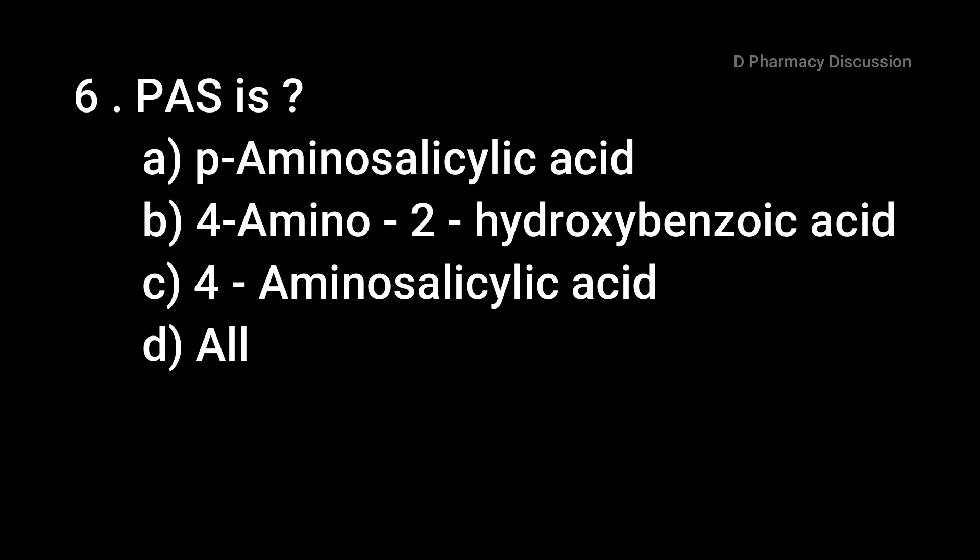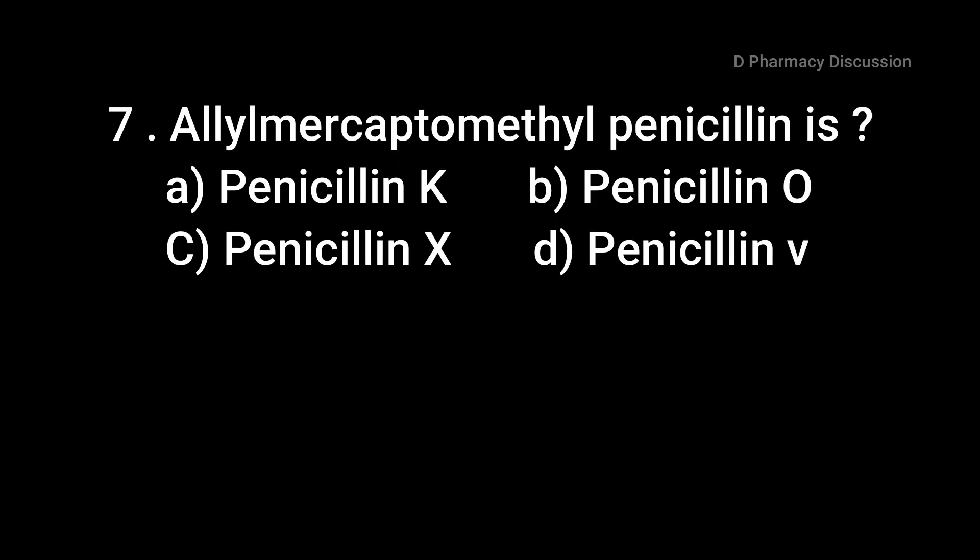Question number six: PAS is — option A: para-amino salicylic acid, B: 4-amino-2-hydroxy benzoic acid, C: 4-amino salicylic acid, and option D: all. The correct answer is option D, all. Question number seven: allyl mercaptomethyl penicillin is — option A: penicillin K, B: penicillin O, option C: penicillin X, and option D: penicillin V. The correct answer is option B, that is penicillin O.